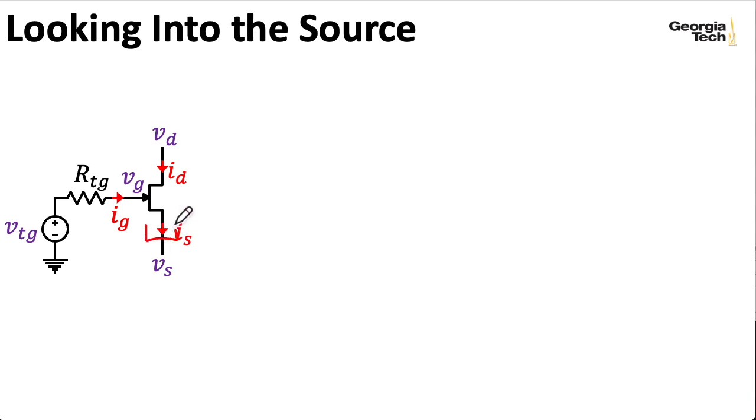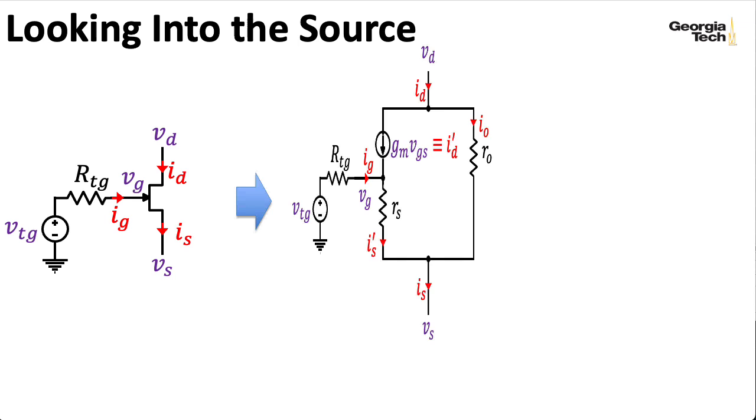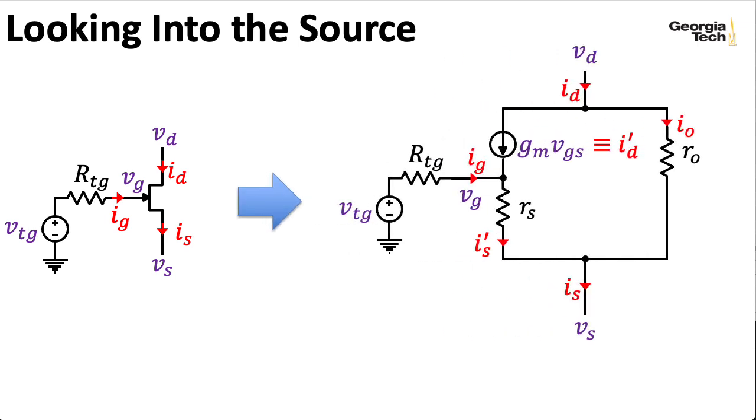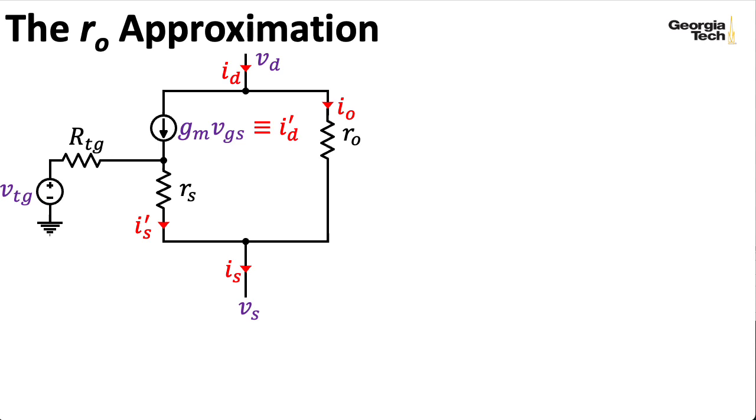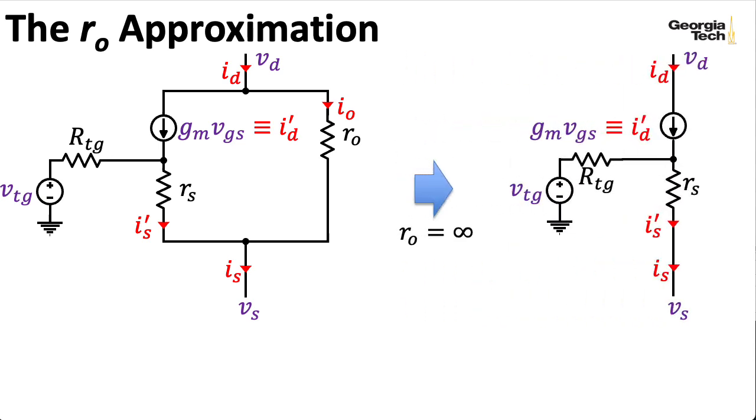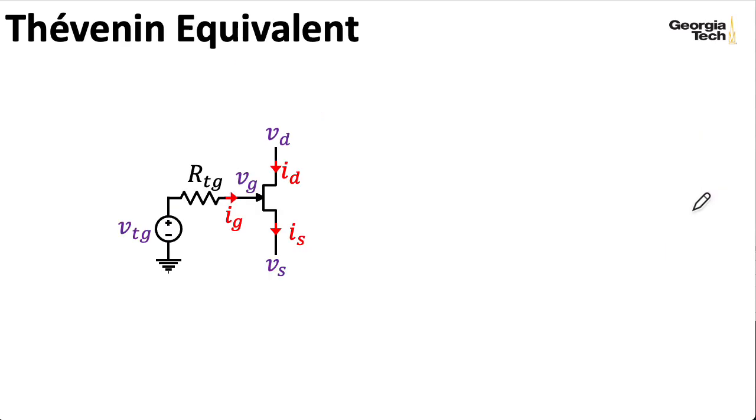Now let's talk about computing the Thevenin equivalent circuit seen looking up into the source in terms of the Thevenin equivalent circuit seen looking out of the gate. Once again, RTG doesn't really matter because we don't have significant current flowing through the gate. Once again, I'm going to use the T model. And once again, I'm going to use the R0 approximation. So we'll assume that R0 basically isn't there. Now remember, there's no current flowing through RTG. So there's no voltage lost across it. So I have a voltage VTG here. And bam, there's my Thevenin equivalent circuit. I have a Thevenin equivalent voltage of VTG and a Thevenin equivalent resistance of RS. It's just sitting right there. So that is extremely convenient.